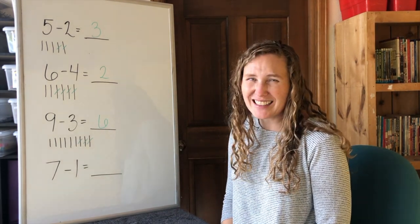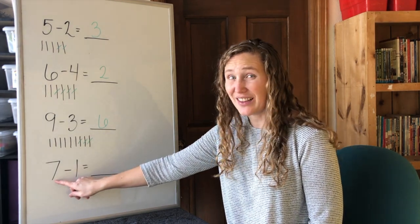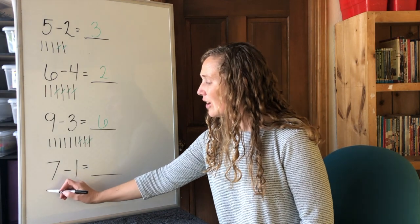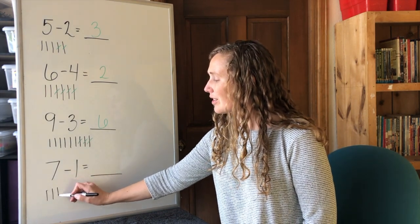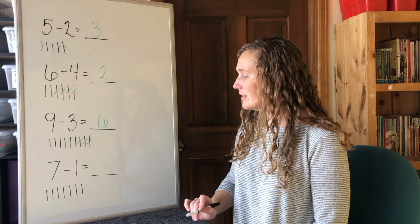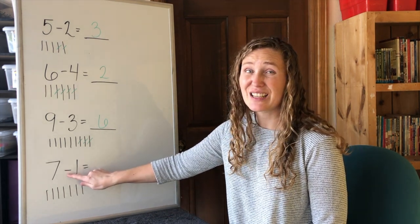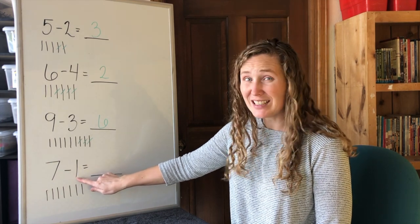One more. We start with seven. Seven tally marks. One, two, three, four, five, six, seven. Then we take away, minus, subtract one tally mark.